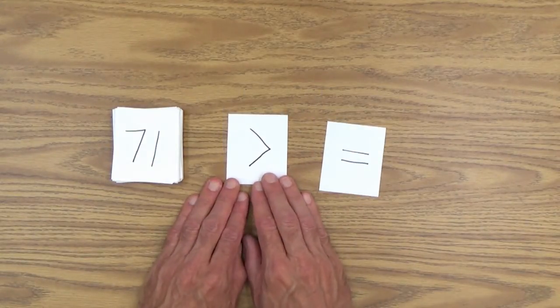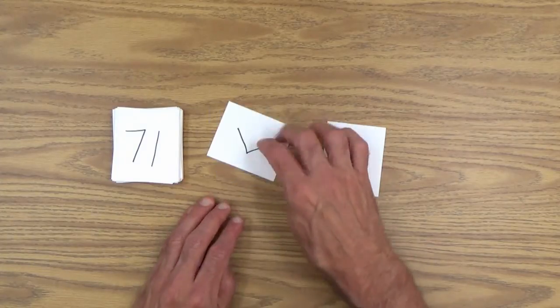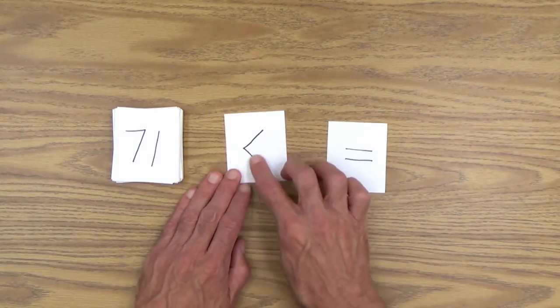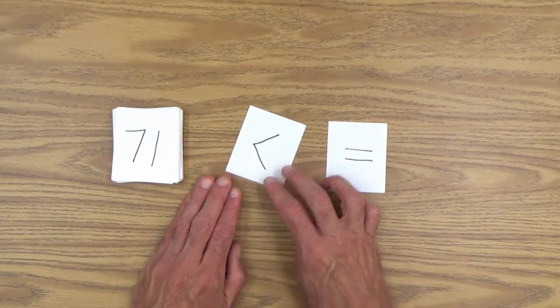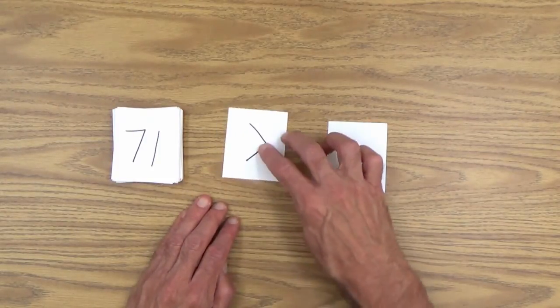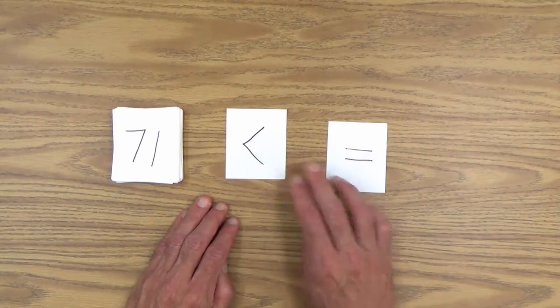And of course, this sign is greater than. And if you put it this way, less than. And you could perhaps have your child trace it with her finger a few times to get used to that. And of course, it can be flipped to use it however you want. And finally, there is the equal sign.